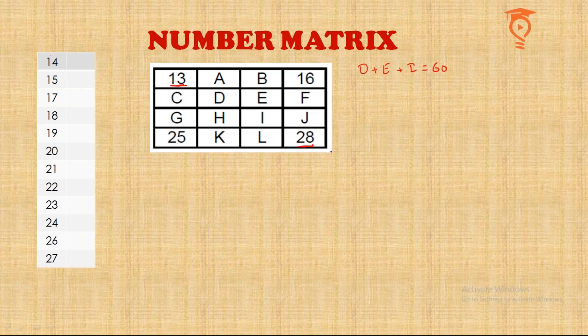The remaining 12 numbers to be found are listed in a table on the left. As we keep finding the letter against each number, we'll write it in the second column. First of all, we have an urgent need to figure out the sum that is going to be constant for each row, each column, and each diagonal — and there are two logics to figure out that sum.